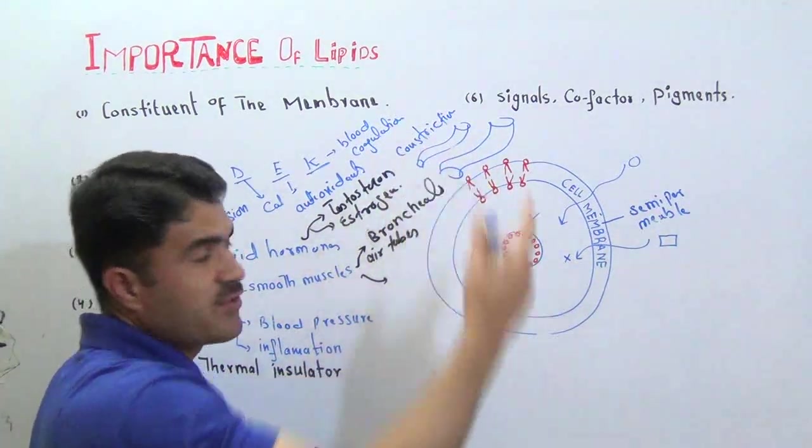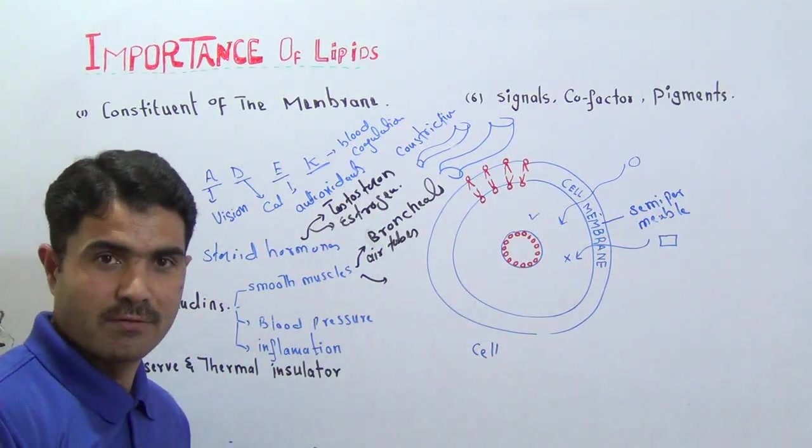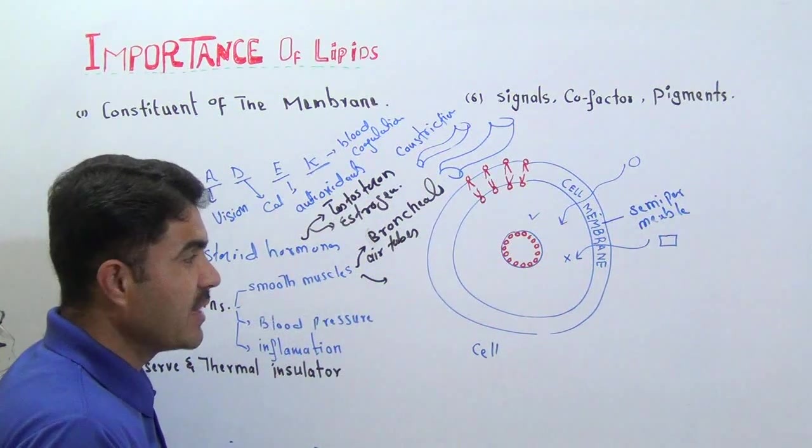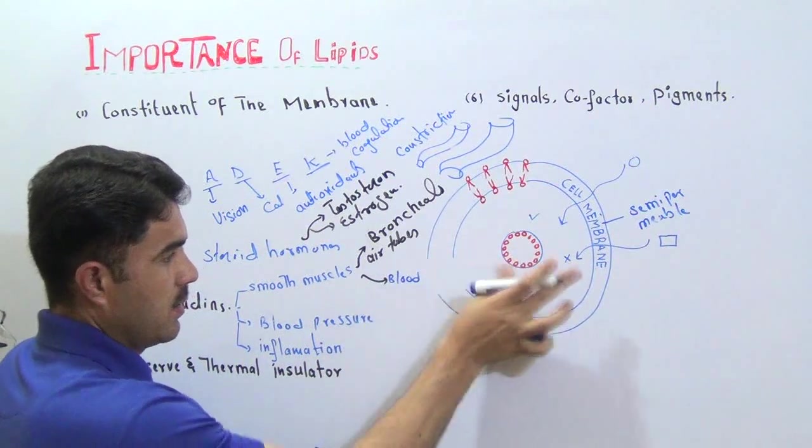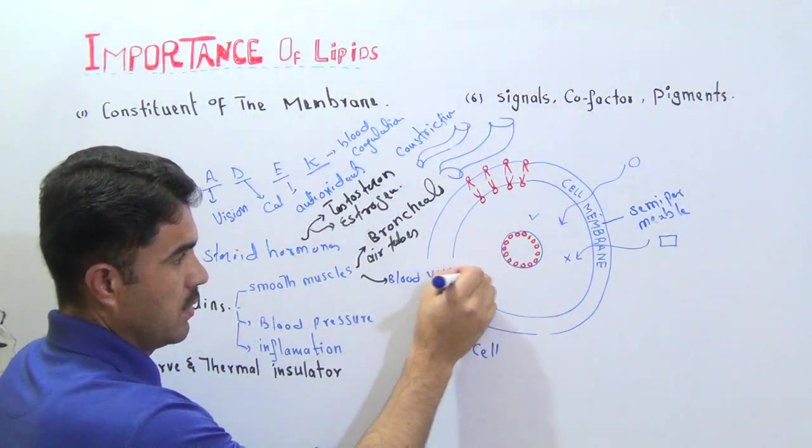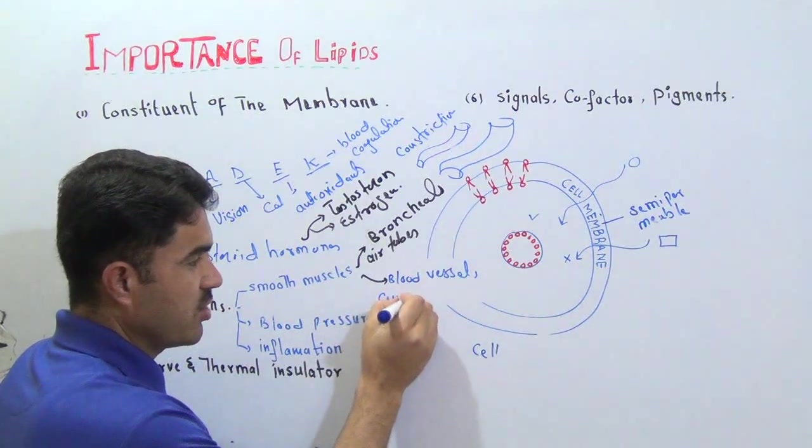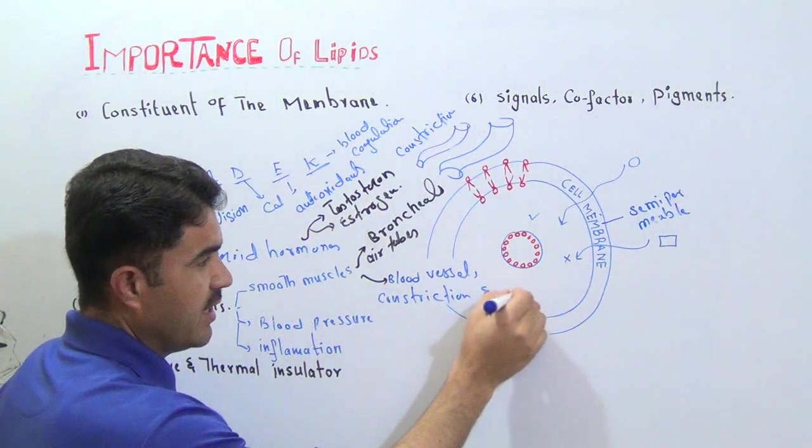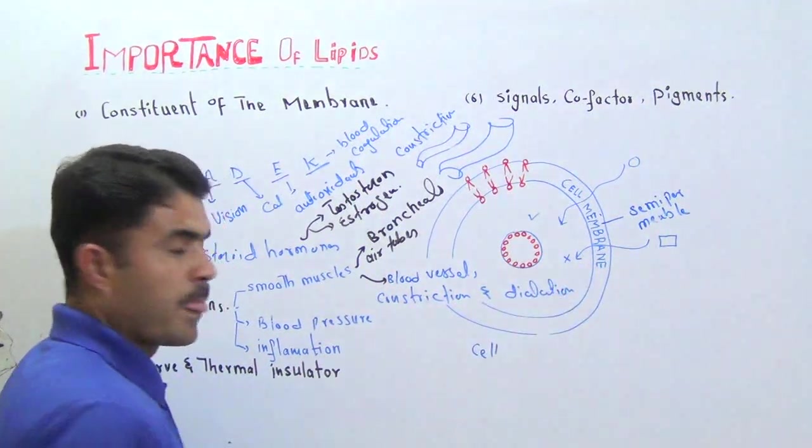A patient of asthma will not like his or her air tubules in the constricted state. In the dilated state, the airflow will be maximized. Smooth muscles are also present in blood vessels. Blood vessels also undergo constriction and dilation.